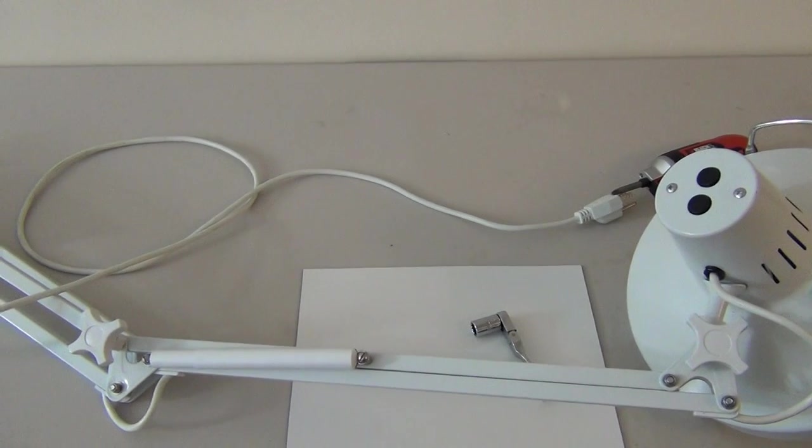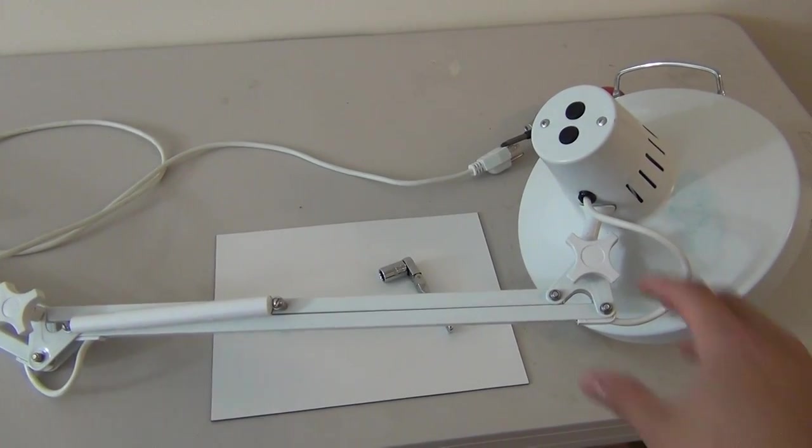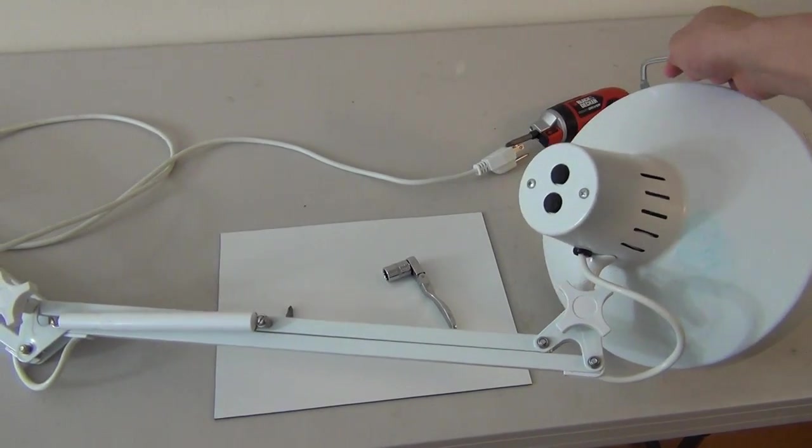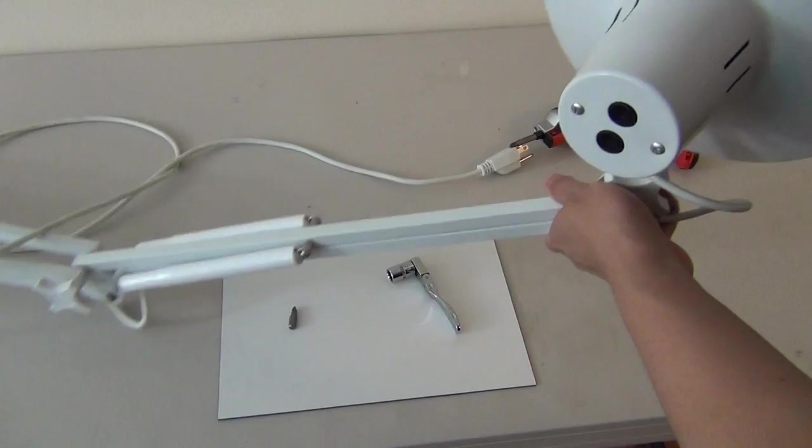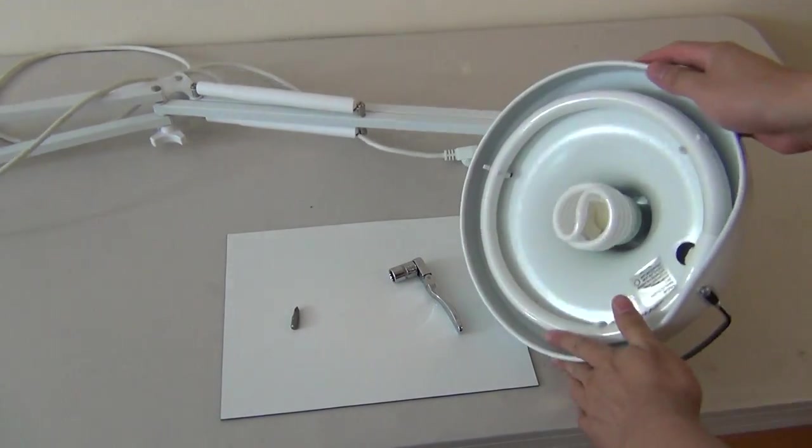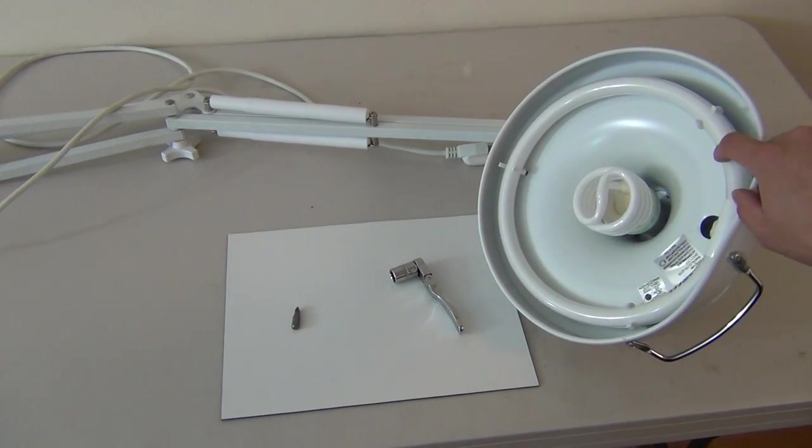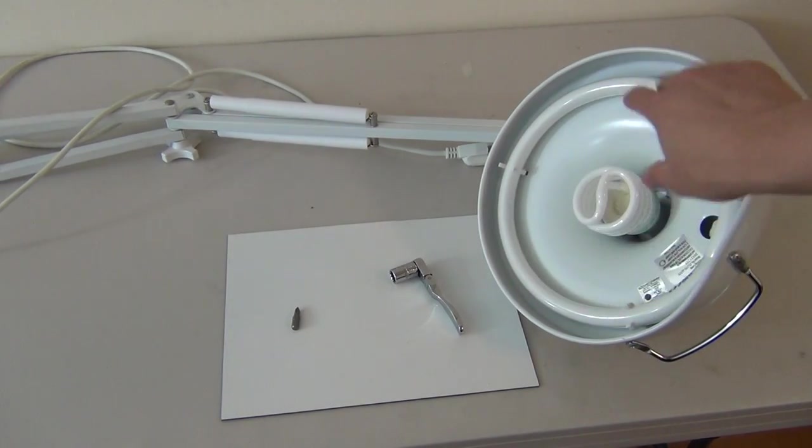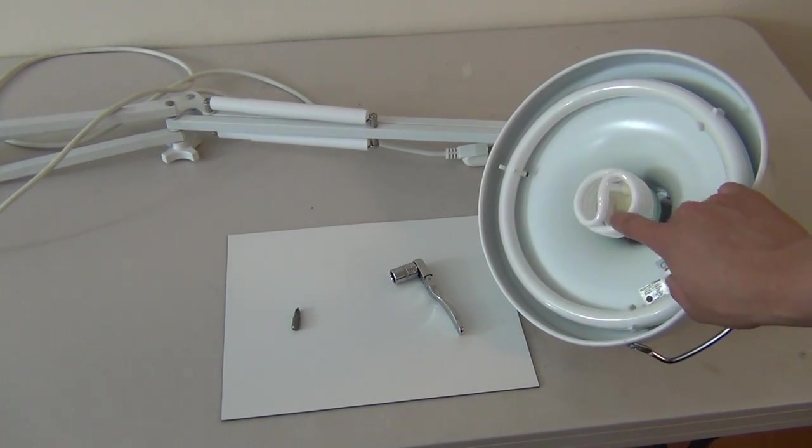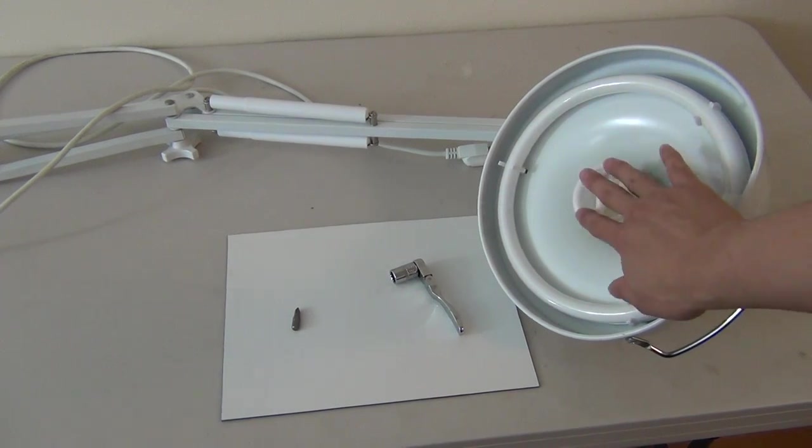So today I decided to make a video showing you guys out there who also love these headlights as much as I do how to repair them. Mostly artists use them. I notice a lot of people who do oil paintings or whatever, they need full spectrums of light. This light comes with a 25-watt fluorescent light bulb which is white.